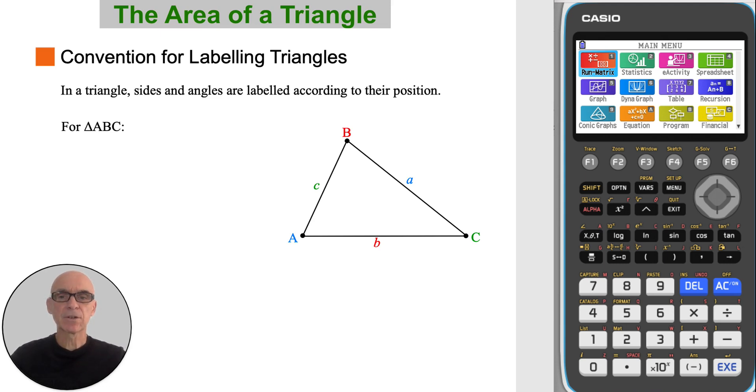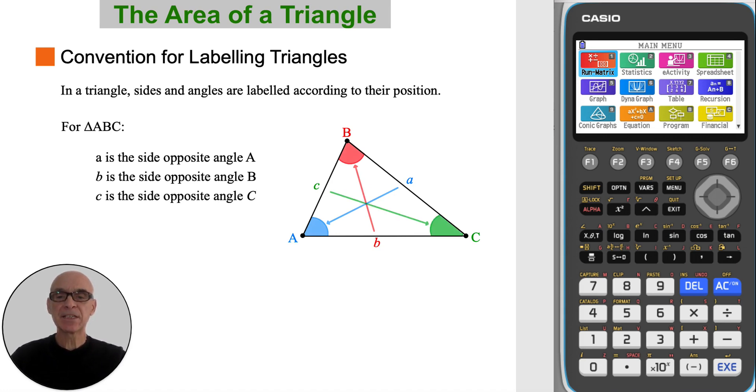In a triangle, sides and angles are labelled according to their position. A is the side opposite angle A, B is the side opposite angle B, and C is the side opposite angle C.